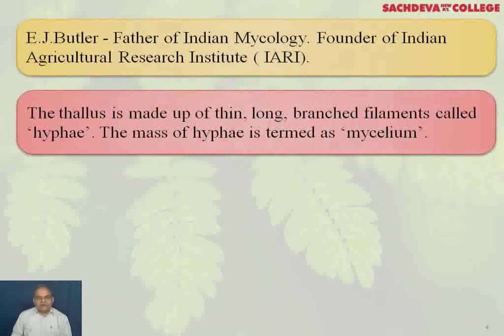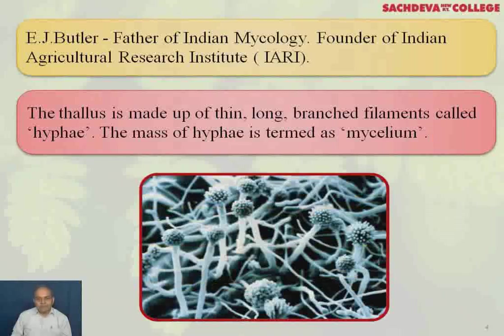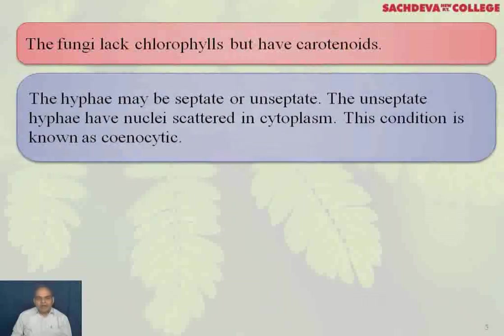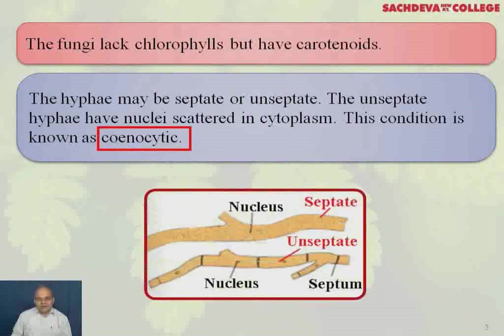The thallus is made up of thin, long, branched filaments called hyphae, and the mass of hyphae is termed mycelium. Fungi lack chlorophyll but have carotenoids. The hyphae may be septate or unseptate. The unseptate hyphae may have nuclei scattered in the cytoplasm; this condition is known as coenocytic. You can see both coenocytic and septate hyphae.